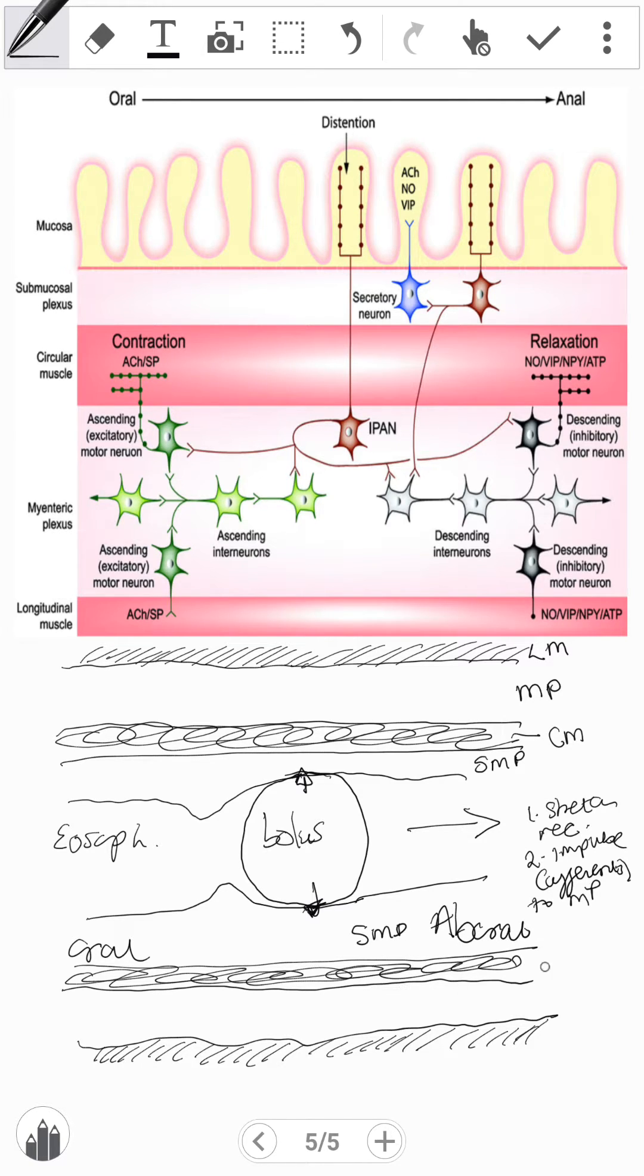Now we also have the same here. We have the submucosal plexus, circular muscle, myenteric plexus, and the longitudinal muscle. So what's happening on one side is happening on the other side.